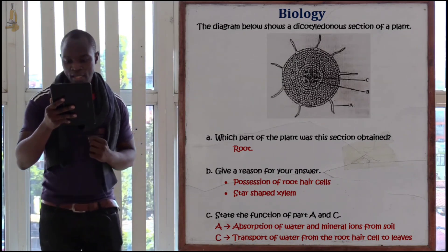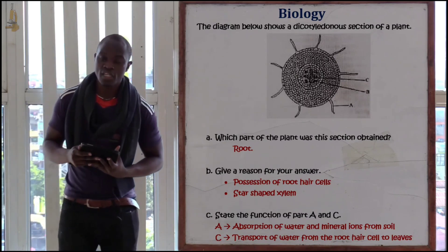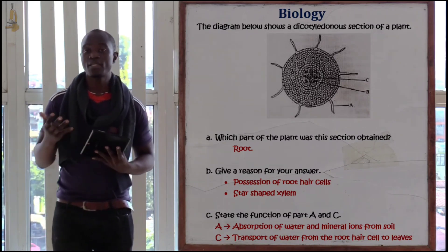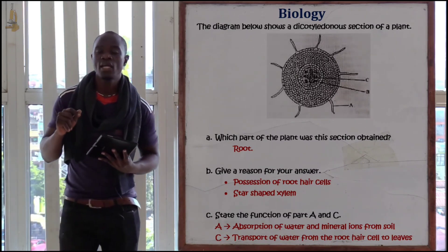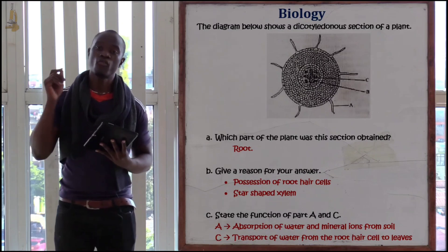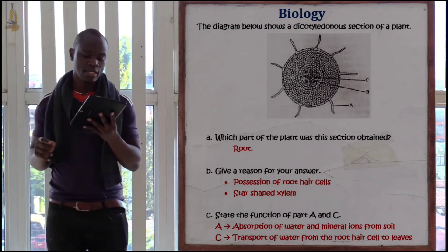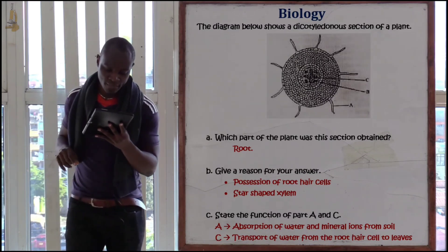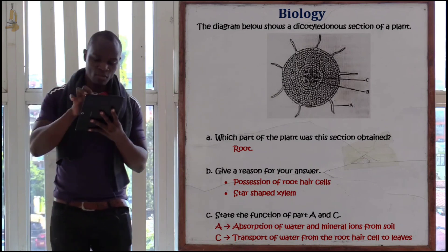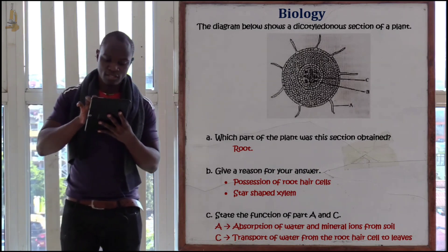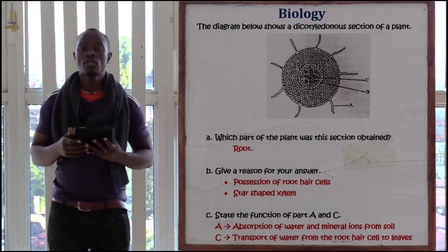The next question asks: state the function of the parts labeled A and C. Part A is the root hair cell. The function of the root hair cell is absorption of water and mineral salts from the soil and into the plant.